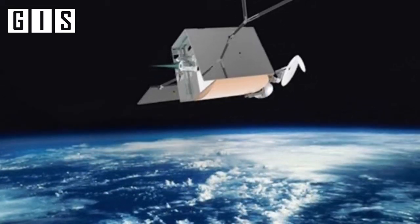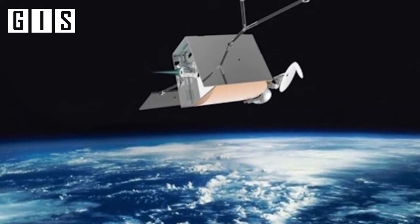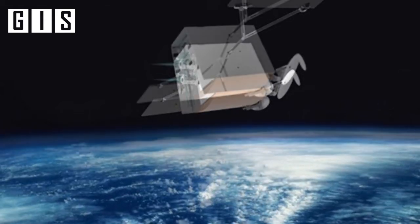OneWeb is one of several companies working on an Internet from Space project, using a combination of low-altitude satellites to beam internet connectivity to ground terminals on Earth's surface.